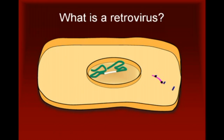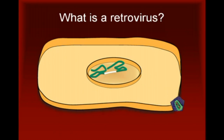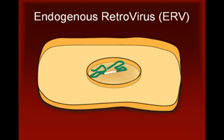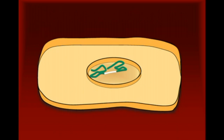The most well-known retrovirus is the human immunodeficiency virus, or HIV, the virus that causes AIDS. An endogenous retrovirus, or ERV, is a stretch of DNA that has been left behind by a past retroviral infection.